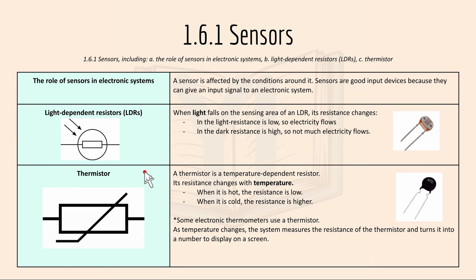A thermistor is a temperature dependent resistor and its resistance changes with temperature. When it is hot the resistance is low, and when it is cold the resistance is higher. Some electronic thermometers use a thermistor — as temperature changes, the system measures the resistance of the thermistor and turns it into a number displayed on a screen.